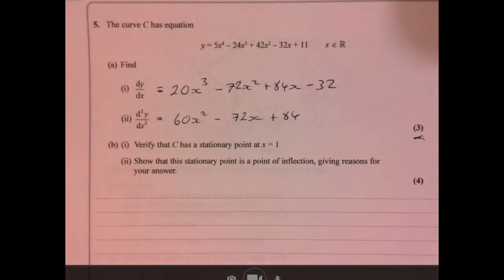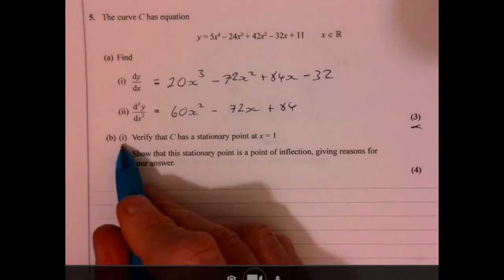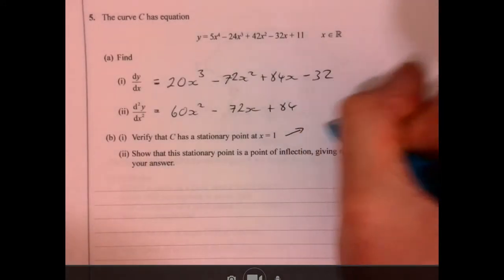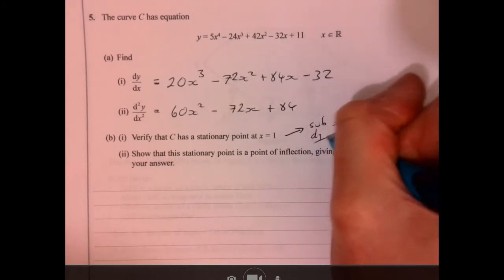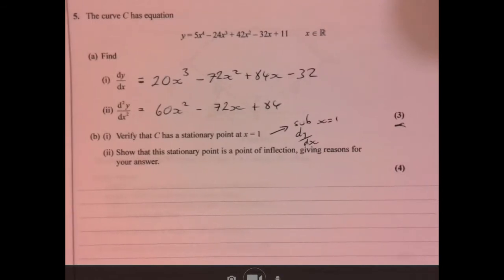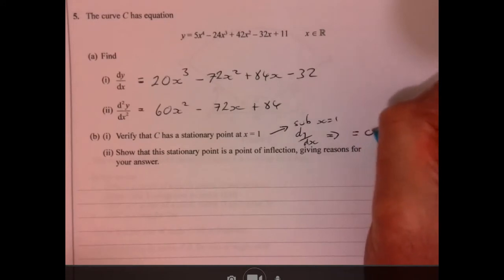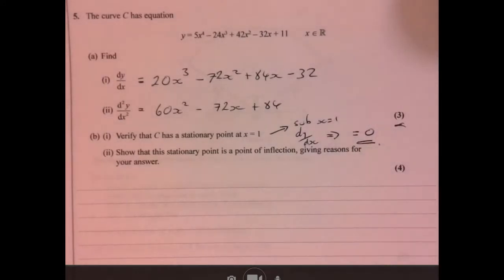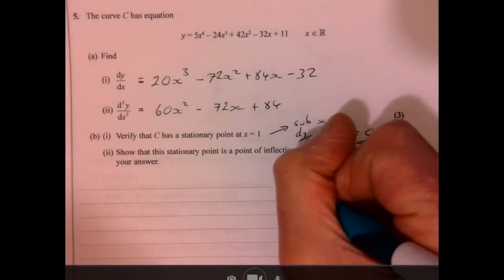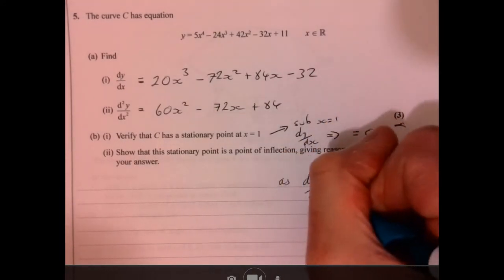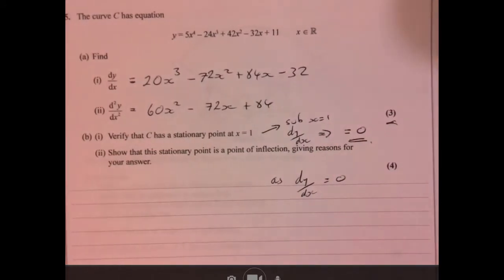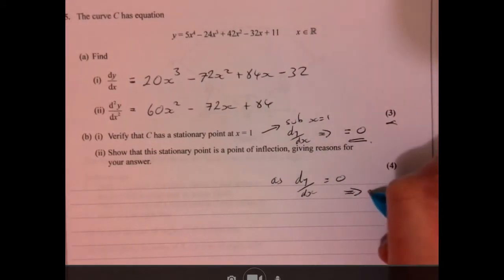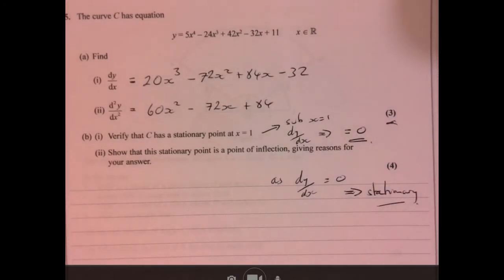Now, part b. All you've got to do here is let's just sub in, let's just sub x equals 1 into dy/dx. And if you do that, what will happen is that it equals 0. So we can say, so as dy/dx is equal to 0, it must be stationary. I.e., the gradient is equal to 0.